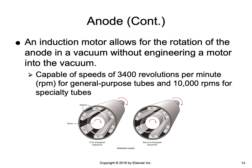Using an induction motor allows for the rotation of the anode in a vacuum tube without engineering a motor into the vacuum. Such motors are capable of rotating the anode at speeds of 3,400 revolutions per minute for general purpose tubes and 10,000 RPMs for specialty tubes. This figure shows an induction motor — the operation of the opposing pairs of stators in sequence ultimately causes rotation of the rotor.